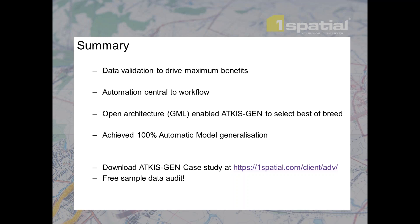We also looked at how automation is central to the workflow — Barbara showed how that has been achieved at ATKiS Gen with both automatic model generalization and automatic cartographic generalization. The work they've done is built around an open architecture: the transformation format AAA is GML, which enabled ATKiS Gen to select a variety of technology — using One Spatial for automation and different editing clients for manual updates. We're also offering a free sample data audit that will run automatic validation on your data and provide feedback on how ready it is for automation and generalization.